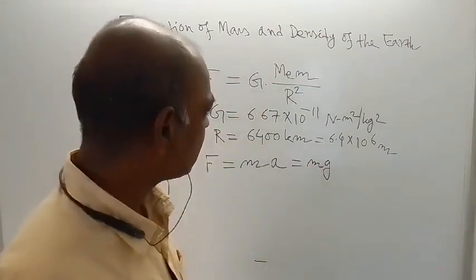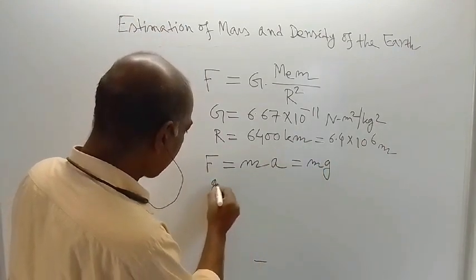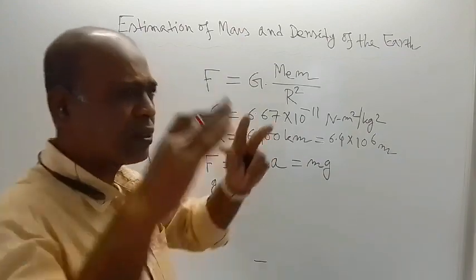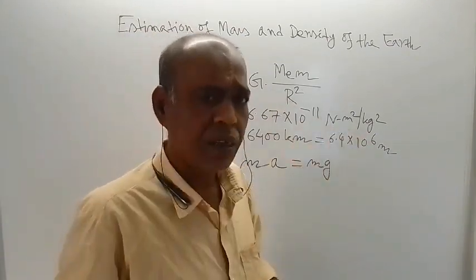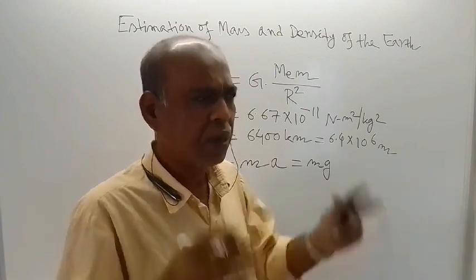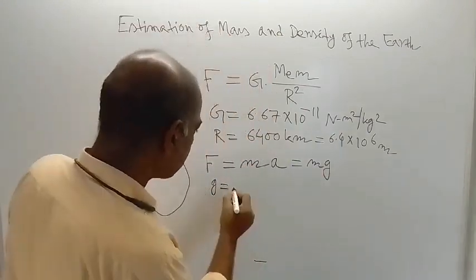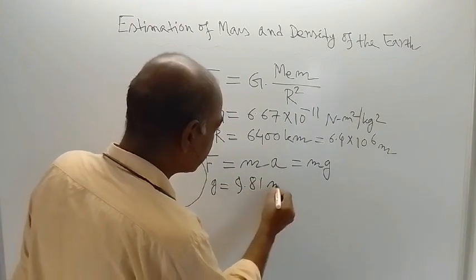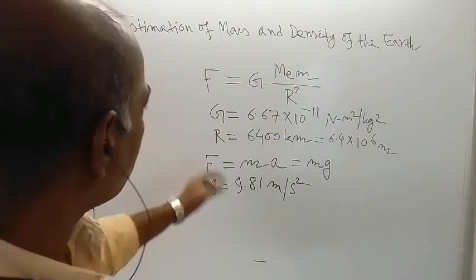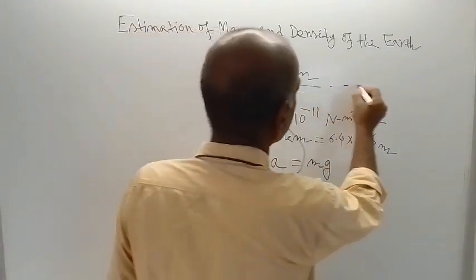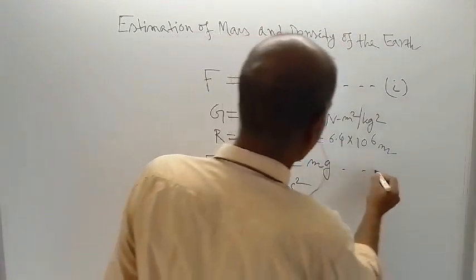g is acceleration due to gravity. The average value of g at different places on the surface of the Earth differs, but one average value is used, and that average value is equal to 9.81 meter per second square. Now, if you combine — this is equation number 1 and this is equation number 2.